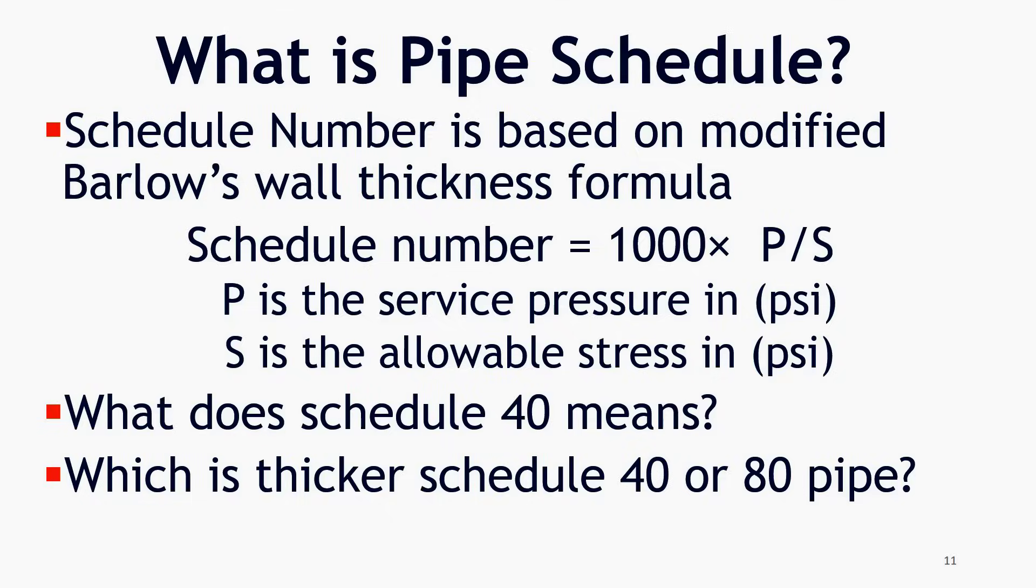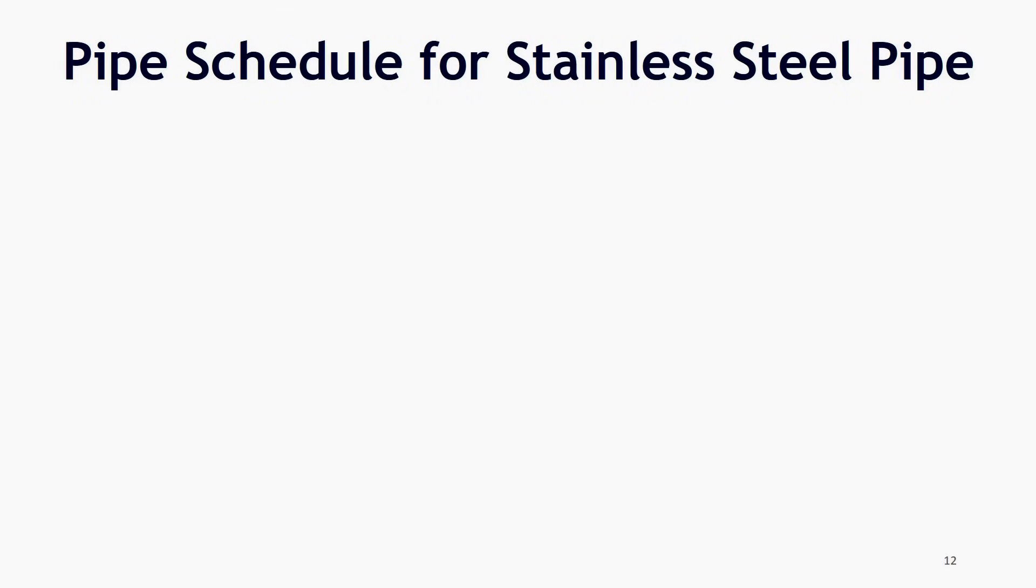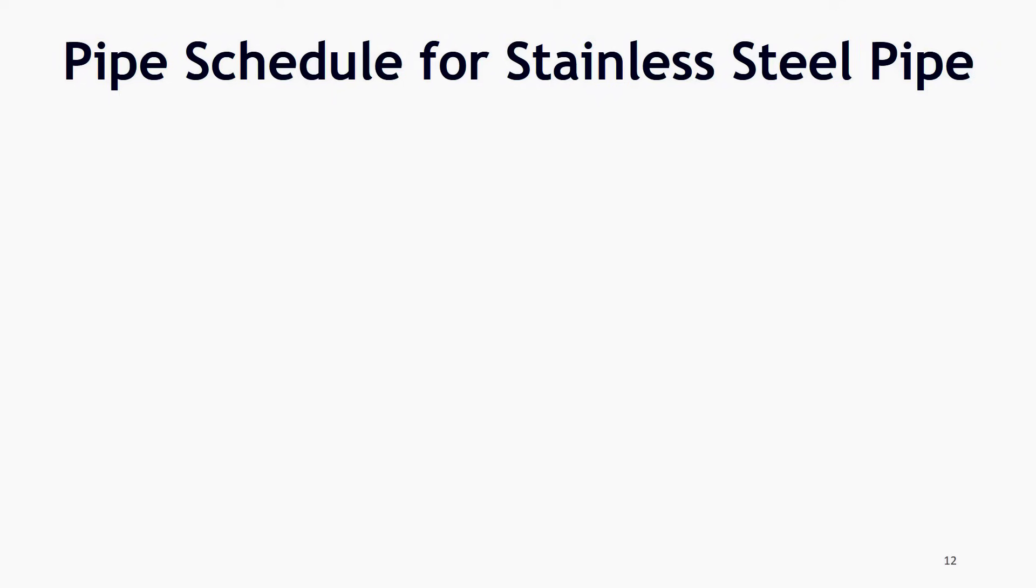Pipe schedule for stainless steel pipe. Cost of stainless steel pipe is much higher than carbon steel pipe. Due to corrosion resistance property of stainless steel, advancement of high alloy stainless steel and fusion welding, less thickness pipe can work satisfactorily without fear of early failure. To reduce the cost of material, ASME has introduced different schedule numbers for stainless steel pipe and fittings.